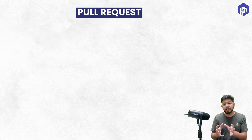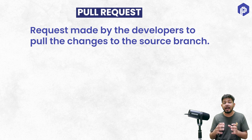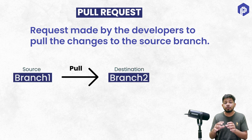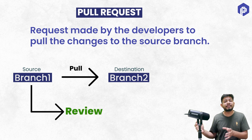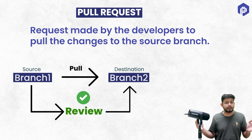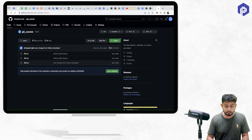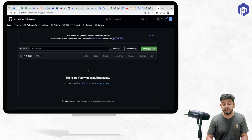To solve this, we have the concept of pull requests. Pull requests are basically requests made by developers to pull changes into the source branch. This is done so that, as a developer, I can inform my fellow developers or manager to review the code changes I made to build the feature.